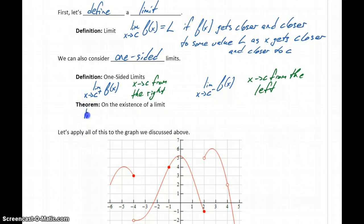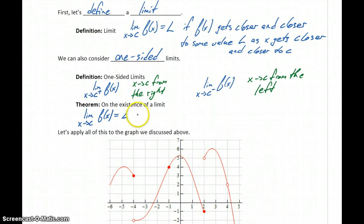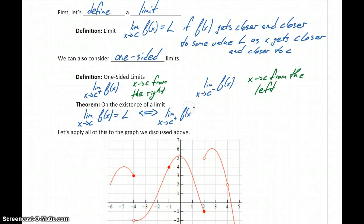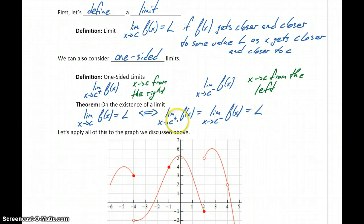We have a theorem that's handy when looking at graphs to find limits. We say that the limit as x approaches c of f of x equals some value L if and only if — this double arrow means the theorem is true in both directions — the limit as x approaches c from the right is exactly the same as the limit as x approaches c from the left, both equal to the same value. If we can find both one-sided limits and they're equal, then our function has a limit at c, and it's that exact same number.